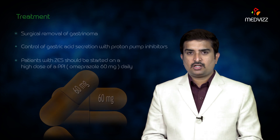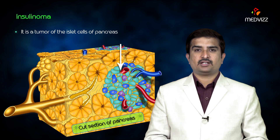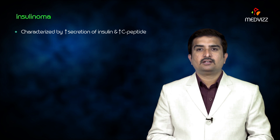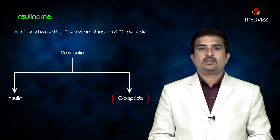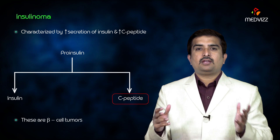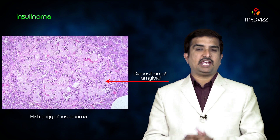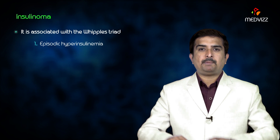Insulinoma is a tumor of the islet cells of the pancreas characterized by increased secretion of insulin and increased C-peptide, a molecule cleaved from pro-insulin during insulin synthesis. There will be B-cell tumors and deposition of amyloid, which is a characteristic feature of insulinoma.